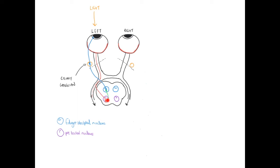In addition to the parasympathetic motor signal being relayed to the muscle of the left pupil, there is also communication from the pre-tectal nucleus in the midbrain to the parasympathetic nucleus on the opposite side — the Edinger-Westphal nucleus for the right eye. From this nucleus, the parasympathetic output reaches the right iris. So even though we stimulated the left eye, the brainstem also communicates with the Edinger-Westphal nucleus of the opposite side, producing the consensual pupillary response.